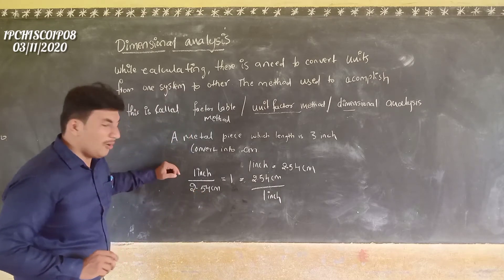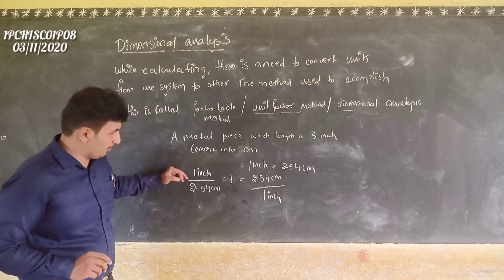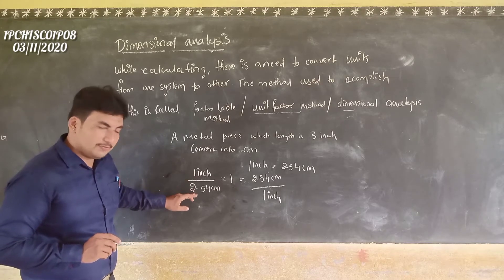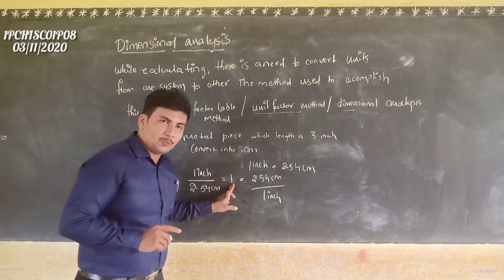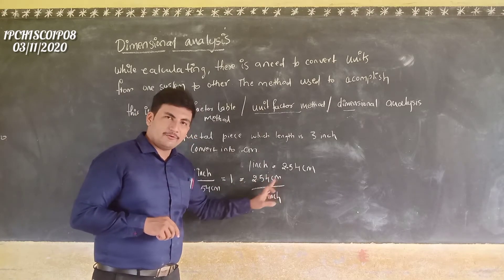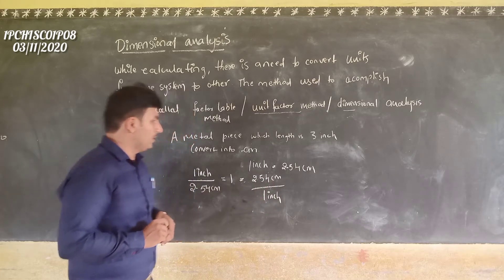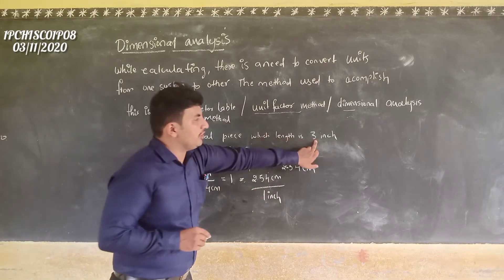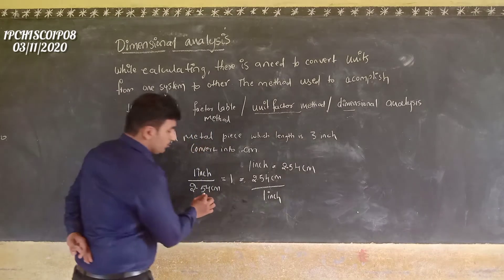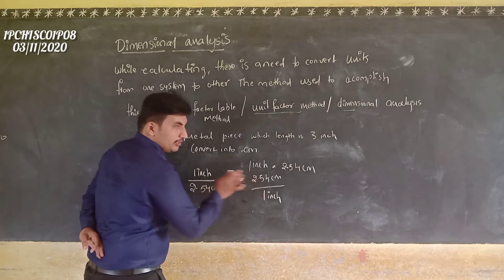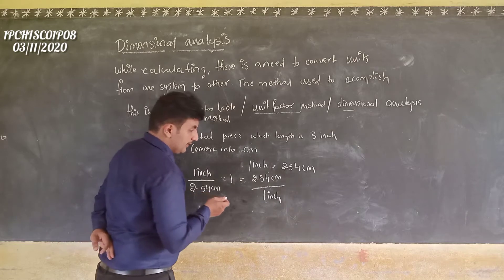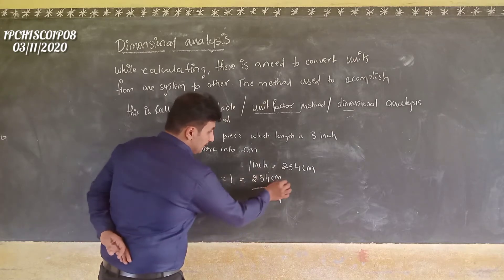You have to understand this step. 1 inch divided by 2.54 centimetres is equal to 1. So it is equal to 2.54 divided by 1 inch. Now, you have to convert 3 inches into centimetres. By calculating, you have to consider either this or this. Which one we have to consider for calculation? This one — because centimetre is in the numerator.